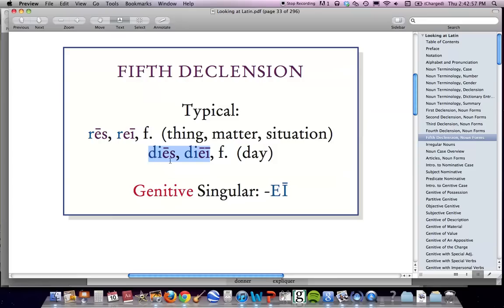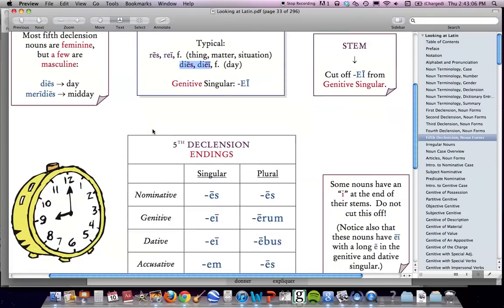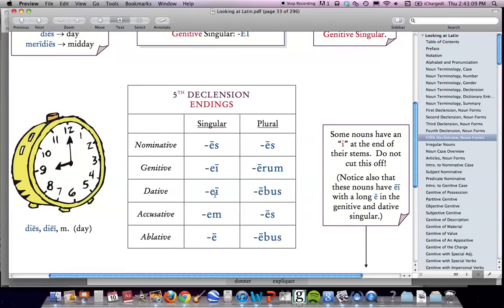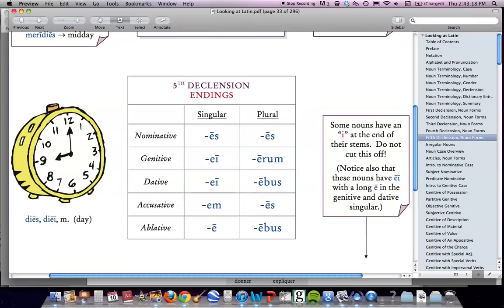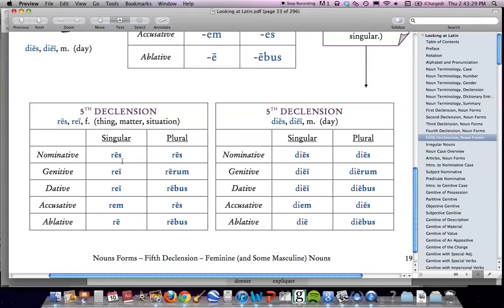The fifth declension is a collection of endings that for words that are always feminine. Nice news. The endings are right here: es, ei, ei, em, e, es, erum, ebus, es, ebus. These are the endings of the fifth declension. You've got to memorize these, along with the memorization of the endings of the fourth declension. If you put these endings at the end of res, for example, res, rei, that means the thing, res, rei, rei, rem, re, res, rerum, rebus, res, rebus. These are the endings of the fifth declension.